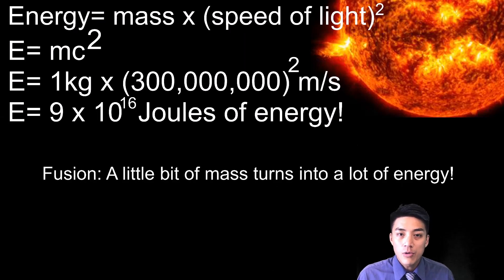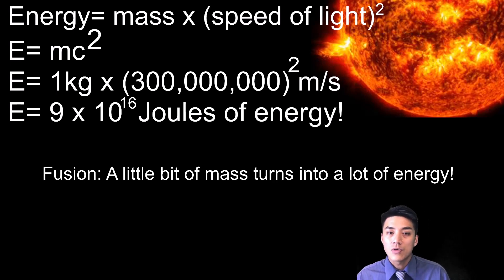Einstein came up with an equation which can help explain how the sun converts a little bit of mass into a whole lot of energy. And that equation is E equals MC squared. Energy is equal to mass times the speed of light squared. So let's just pretend you have one kilogram of matter, and we multiply that by the speed of light. The speed of light is 300 million meters per second. It's super fast. So if you take 300 million and you square it, you get a really large number. You get 9 times 10 to the 16th joules of energy.